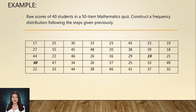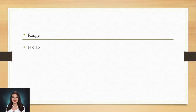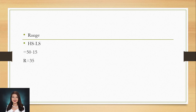Let's take a look at this raw score of 40 students in a 50-item mathematics quiz. We will construct a frequency distribution following the steps given. The first step is to compute the value of the range, finding the highest score and the lowest score. Our population here is 40 students. In this table, our highest score is 50 and our lowest score is 15. Using the formula HS minus LS: 50 minus 15 equals 35. So our range is 35.